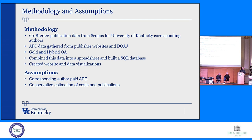Our methodology: we pulled publication data from 2018 to 2022 from Scopus for University of Kentucky corresponding authors. As Michael mentioned, you can't limit by corresponding author in Scopus, but if you export the data there is a correspondence address field that helps narrow it down — though that was tricky because some authors only put their uky.edu email and others wrote 'University of Kentucky.' We gathered APC data from publisher websites and DOAJ for gold and hybrid journals, combined that into an Excel spreadsheet, refined it with OpenRefine, and populated it into an SQL database with a website and data visualizations.